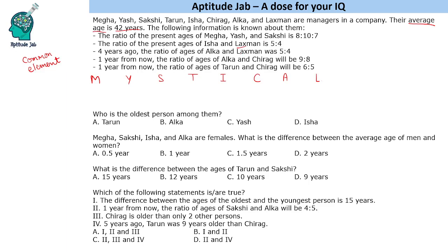Lakshman has been mentioned twice. The ratio of present ages of Isha and Lakshman is 5:4, and 4 years ago the ratio of ages of Alka and Lakshman was 5:4. So Lakshman should be a multiple of 4, because currently it is also 4 and 4 years ago it will also be a multiple of 4. But that does not help us find any of the values.